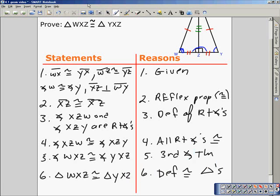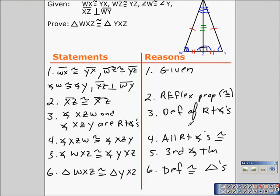And we'll see the proof here in its entirety. Pretty simple. Given statement, we established that the third side is congruent to itself because of the reflexive property. We were only given that one pair of corresponding angles were congruent, but we were told that this segment was perpendicular to this segment. So, we established that angle XZW and XZY are right angles. Therefore, they are congruent because all right angles are congruent. And then, because of the third angle theorem, angle WXZ and angle YXZ were congruent. And finally, that was enough to establish that the two triangles were congruent through the definition of congruent triangles.